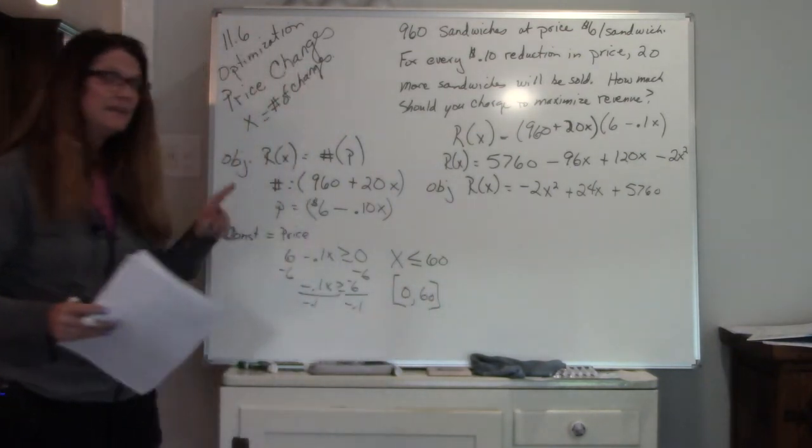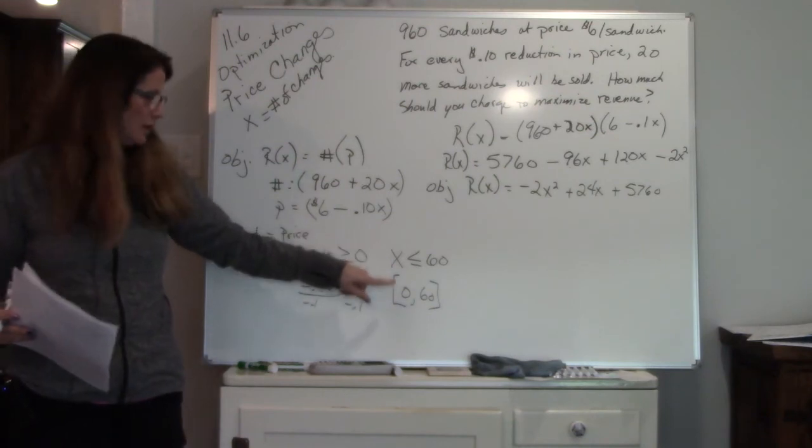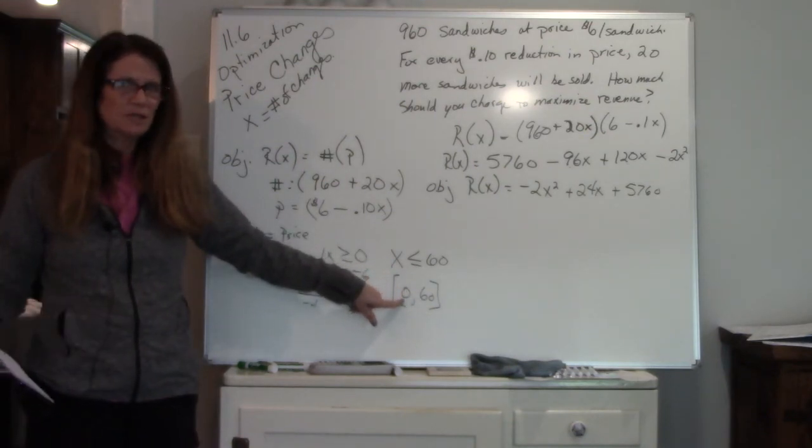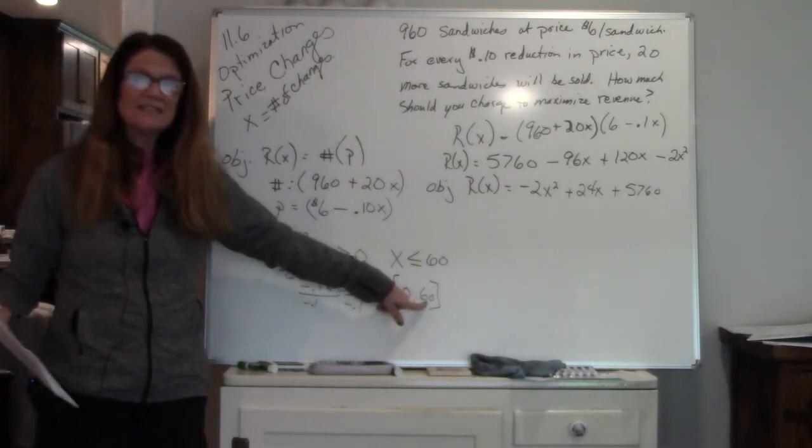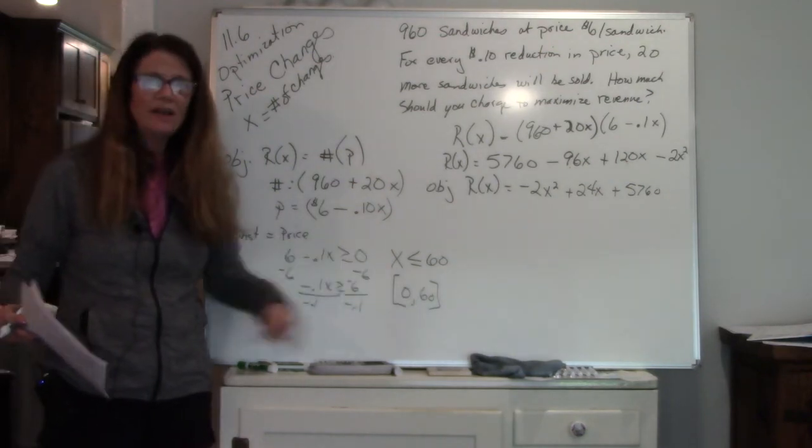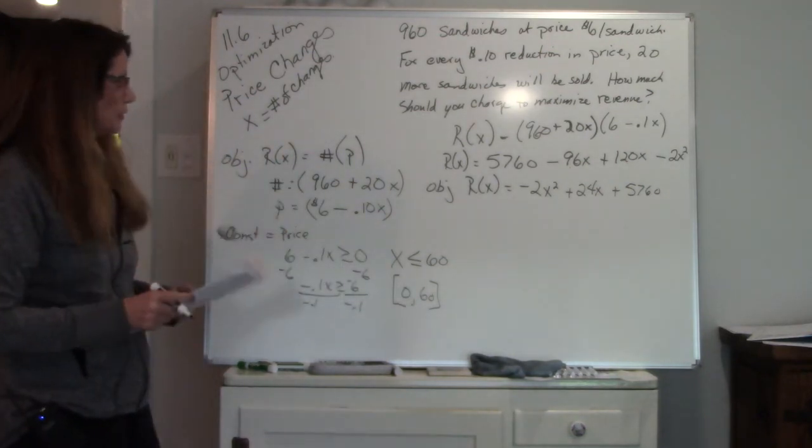So again, the x represents the number of price changes. If I change it 0 times, I'm still charging $6. If I change it 60 times, that's going to take me down to 0. So those are the two values, the two endpoints that I'm going to be working with.